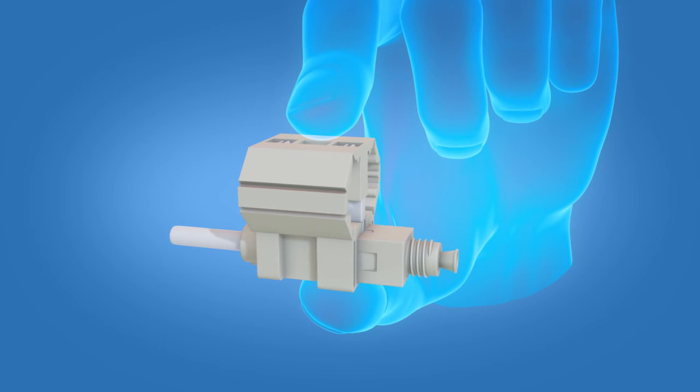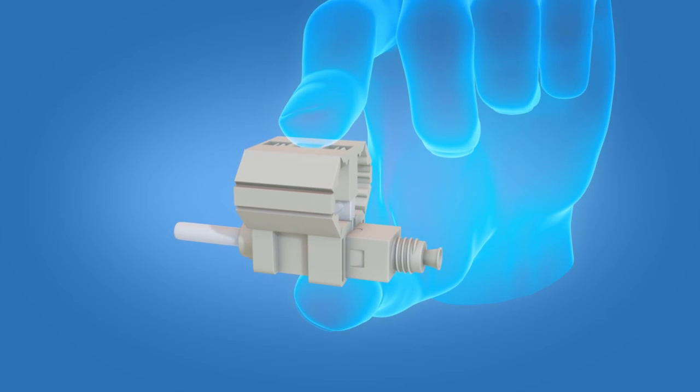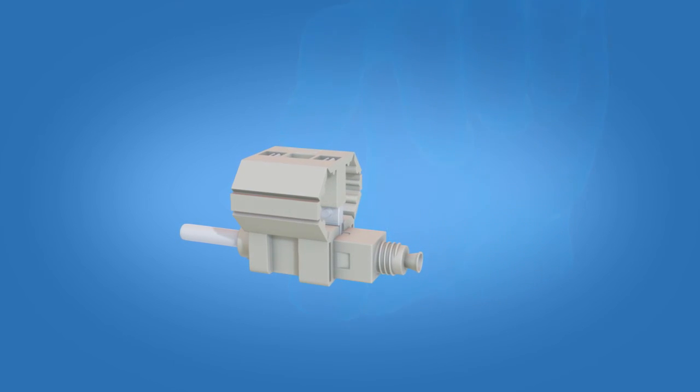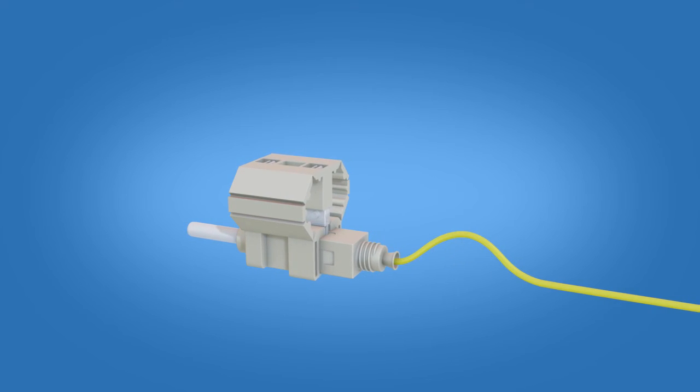Take the Fast ST connector and squeeze the top and bottom of the wedge to ensure that it is engaged. Insert the fiber into the connector. Create a slight bend to maintain contact.